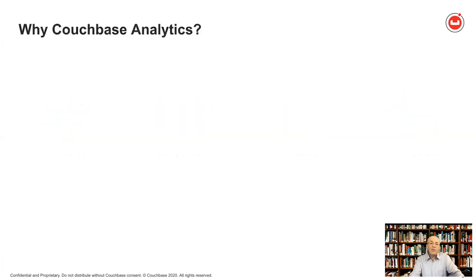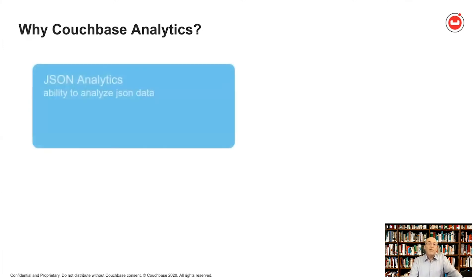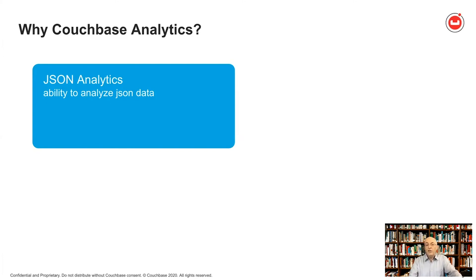This is Couchbase analytics, so let me give a quick overview of what it provides to address these challenges. First, it provides real JSON analytics — it allows you to analyze nested JSON data using a declarative query language that is a generalization of SQL. We call it NICL, for Non-first Normal Form Query Language. It's very powerful because it handles nested data while remaining familiar to SQL developers.